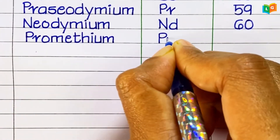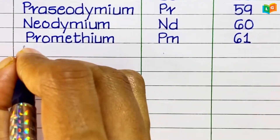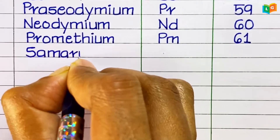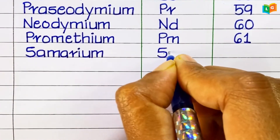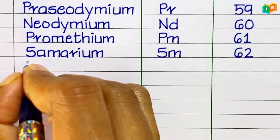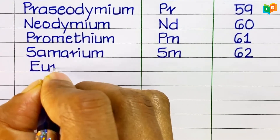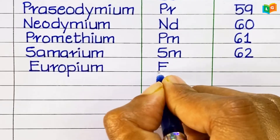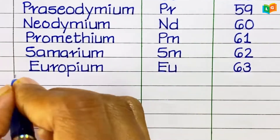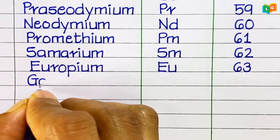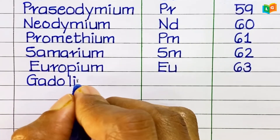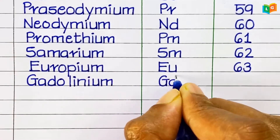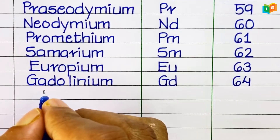Promethium, symbol Pm, atomic number 61. Samarium, symbol Sm, atomic number 62. Europium, symbol Eu, atomic number 63. Gadolinium, symbol Gd, atomic number 64.